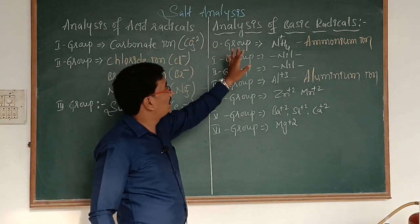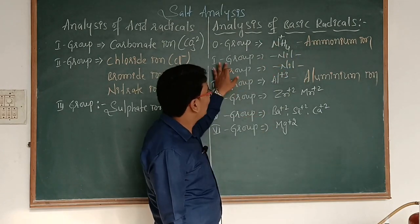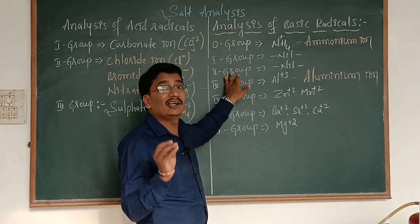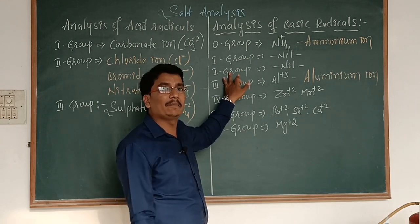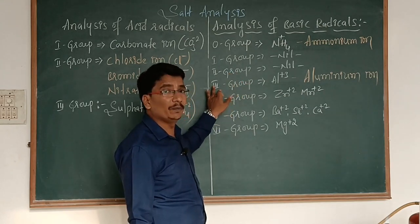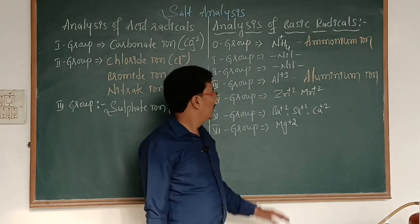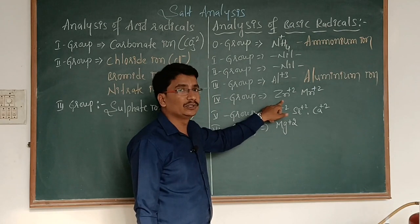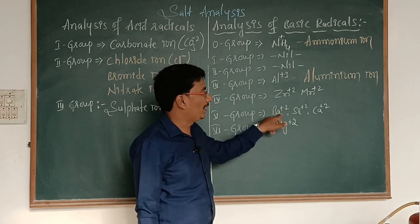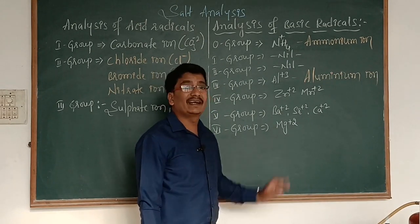Similarly, coming to the basic radicals: in zero group, ammonium ion NH4⁺. There are no ions present in first group and second group of cation ions. The third group basic radical is Al³⁺, aluminum ion. The fourth group basic radicals are Zn²⁺, zinc ion, and Mn²⁺, manganous ion. The fifth group of basic radicals are barium ion, strontium ion, and calcium ion. And the sixth group basic radical is magnesium ion.